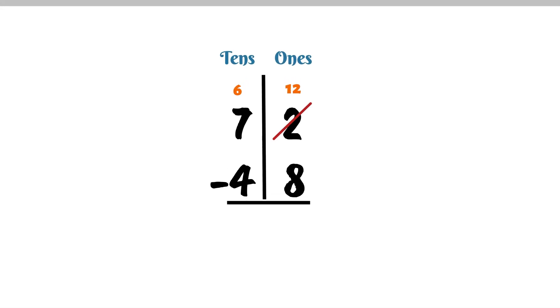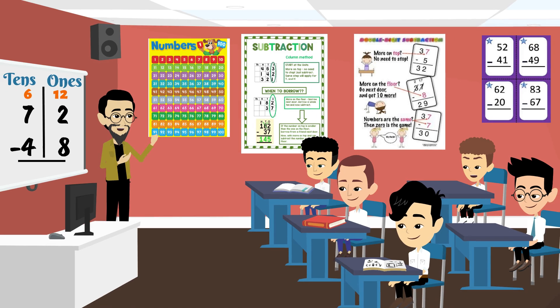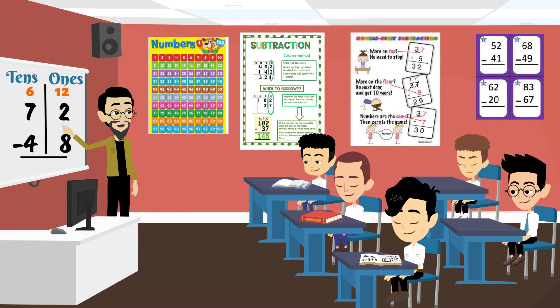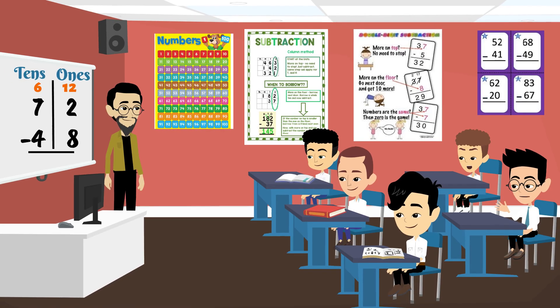Now, let's subtract. 12 minus 8. That's 4. Fantastic. Now, for the 10's place. 6 minus 4. That's 2.